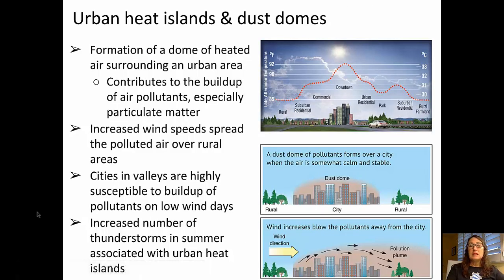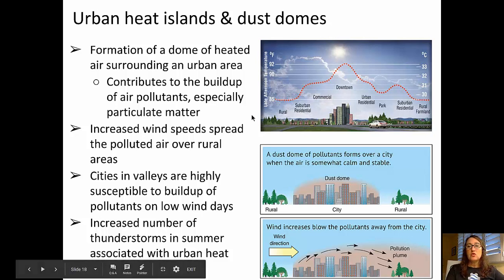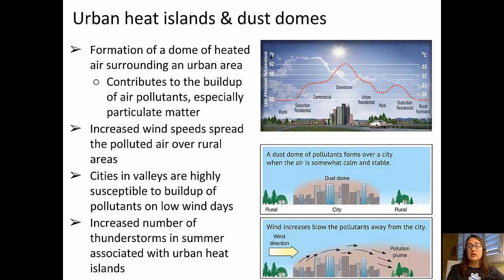Many cities experience the urban heat island effect and dust domes. In the top diagram, there is a graph with the y-axis being temperature in the late afternoon — Fahrenheit on the left, Celsius on the right — and the x-axis going from a rural area to a suburban area to a commercial area to a downtown area and then back towards a more rural region.